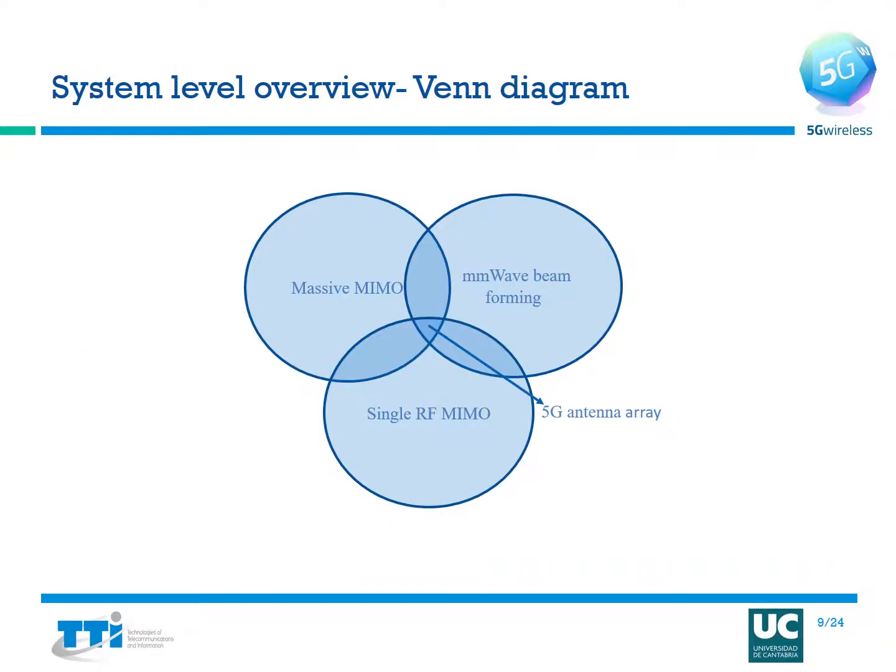What you see here is a system level overview depicted by a Venn diagram of the entire system. The three circles each depict one of the key technologies: massive MIMO, single RF MIMO, and millimeter wave beamforming. At the intersection of these three sectors is the 5G antenna array, depicting the fact that the 5G antenna array will involve key factors which serve each of the three technologies.